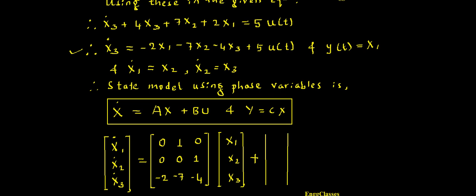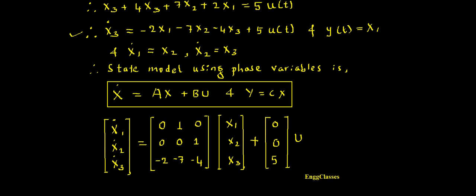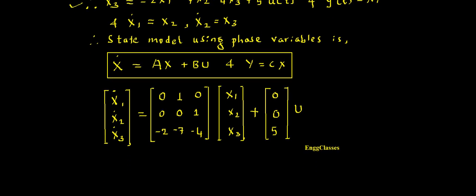I consider B as a 3×1 matrix that gets multiplied with u. X3-dot has a term 5 times u(t), and there is no term with X1 or X2, so I write those as 0. So B equals [0, 0, 5]. This is with respect to X-dot = AX + BU.